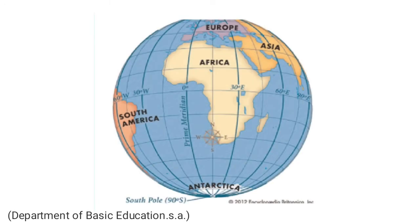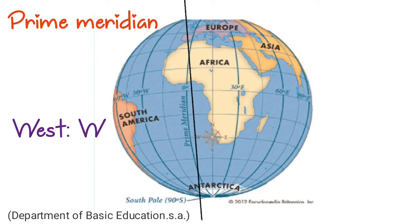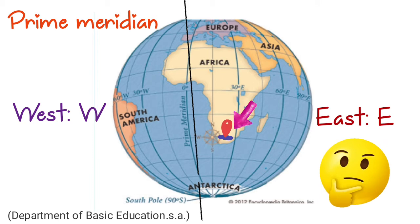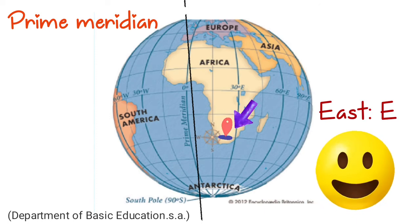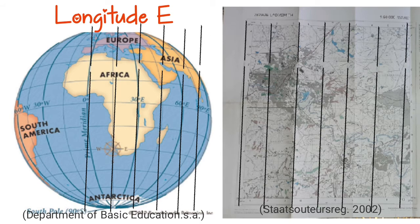Now let's look at the world map again. Can you identify the prime meridian? Some of you know it as the Greenwich meridian. It is a zero degree imaginary line of longitude that divides the earth into west and east. Now let's identify South Africa — it's on the eastern side of the prime meridian. Hence why when you receive a map of a place in South Africa, your longitude will always be east.